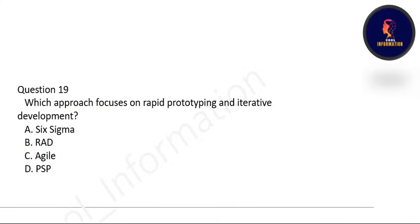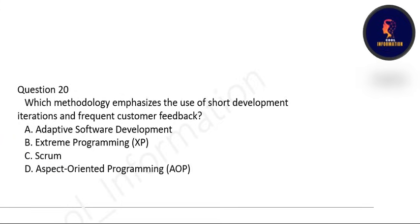Next question: which approach focuses on rapid prototyping and iterative development? Options are Six Sigma, RAD, Agile, or PSP. Correct option is B — RAD, Rapid Application Development. Next: which methodology emphasizes the use of short development iterations and frequent customer feedback? Correct option is C — Scrum.